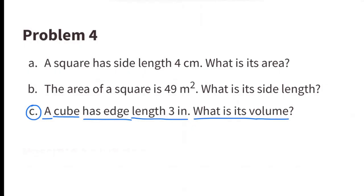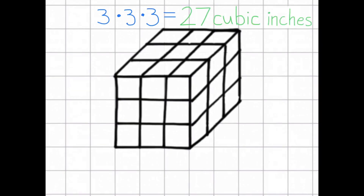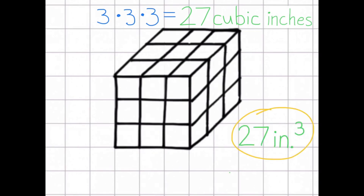Part C. A cube has an edge length of 3 inches. What is its volume? Here is an illustration of a cube with edge length 3 inches. 3 times 3 times 3 equals 27. The volume of this cube is 27 cubic inches, or 27 inches cubed, which is the same as 27 inches to the third power.